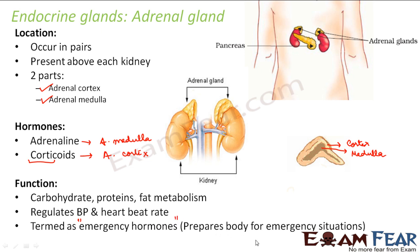They are called emergency hormones because they prepare the body for emergency situations. Emergency situations include times when a person gets very angry or has an unpleasant conversation, feels like fighting, is under tremendous stress or depression, is extremely excited, or is under anxiety or tension. These are known as emergency situations.